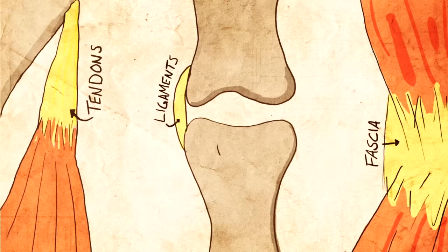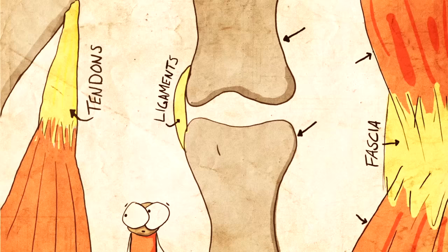Now, let's get this out of the way from the beginning so that there's no confusion. Ligaments connect bone to bone, fascia connect muscle to muscle, and tendons connect muscle to bone.